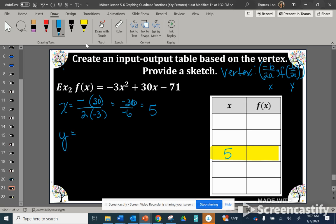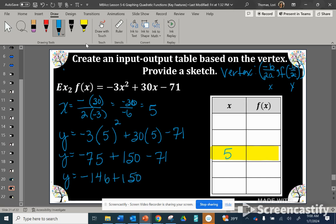Now let's find the y value. We take the input value of 5 and plug it in everywhere we see x. Order of operations: we square the 5 to get 25 times negative 3 equals negative 75, then 30 times 5 is 150, minus 71. That's negative 146 plus 150, and the y-coordinate is 4. So the vertex is 5 comma 4.